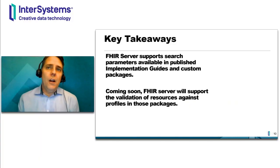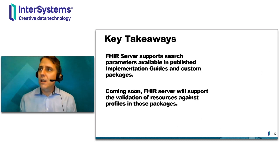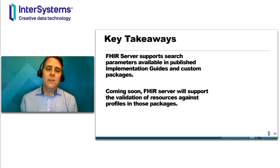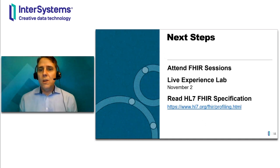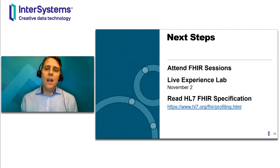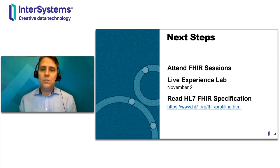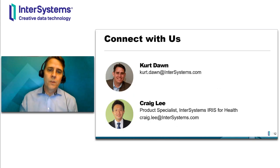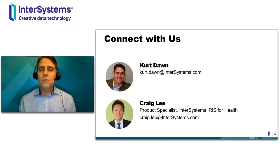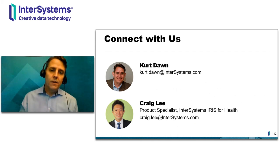Just a couple of key takeaways for today. In 2020.4, the FHIR server supports search parameters available in published implementation guides and custom packages. And coming soon, the FHIR server will support the validation of resources against profiles contained in those packages. I invite you to attend some of the other FHIR sessions here at Virtual Summit. On November 2nd, there is a live experience lab where you can go through an exercise with the FHIR server. There's also the HL7 specification page that deals with the concepts we've discussed today. Feel free to contact me at any point, and I'd also point you to Craig Lee — he's the product specialist for InterSystems IRIS for Health and a great resource for all things FHIR. Thanks for joining me today.